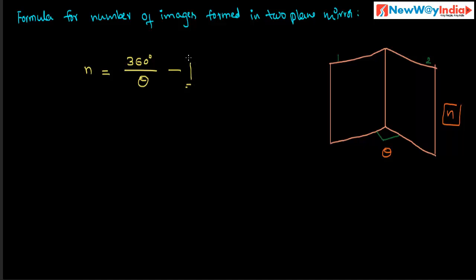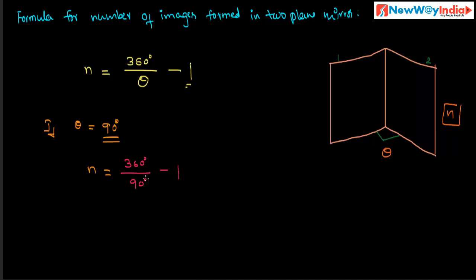Let us consider an example. If the angle theta is equal to 90 degrees, then how many images are formed? The number of images n = 360° ÷ 90° − 1 = 4 − 1 = 3. So three images are formed when the angle of inclination is 90 degrees.